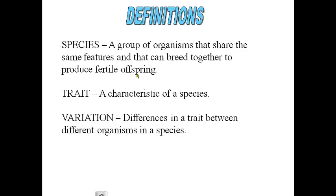This is also why species that man has created, like ligers, are not considered actual species. If you breed a tiger and a lion in a lab and make a liger, those ligers are generally not able to produce their own offspring. So if it's genetically manipulated in a lab we don't call it a species, but if in nature a group of organisms can breed together to make fertile offspring, we call them a species.